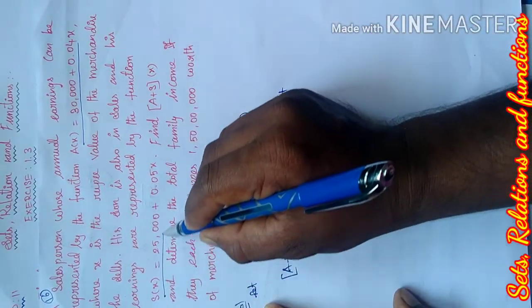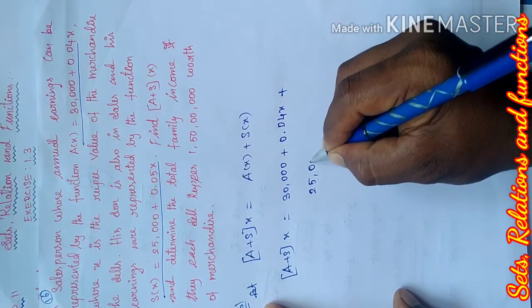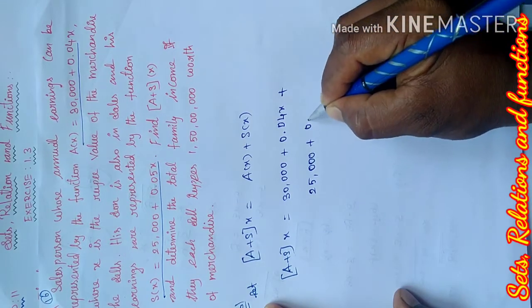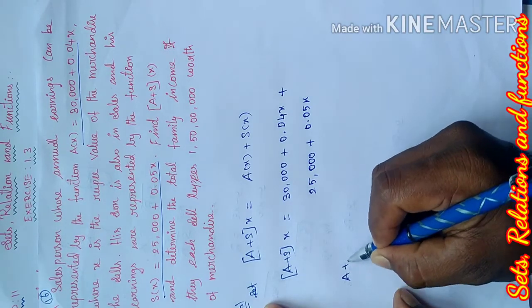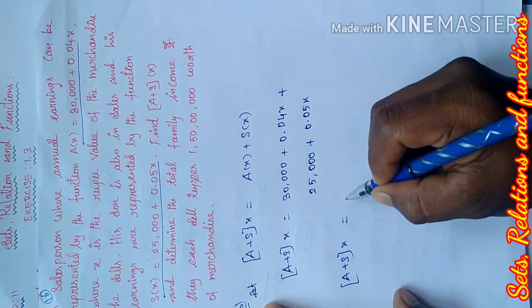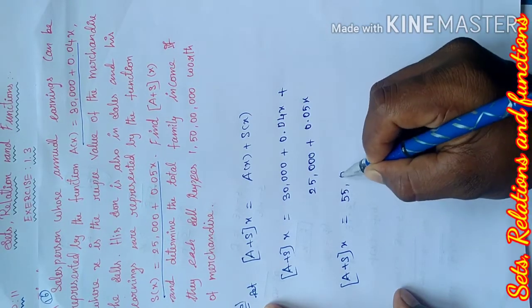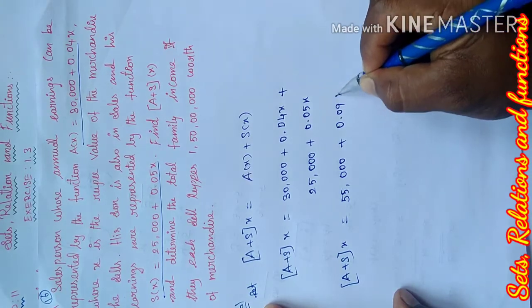S(x) value equals 25,000 plus 0.05x. Therefore, A + S(x) equals, when we add the values, 30,000 plus 25,000 is 55,000, plus 0.04x plus 0.05x is 0.09x.